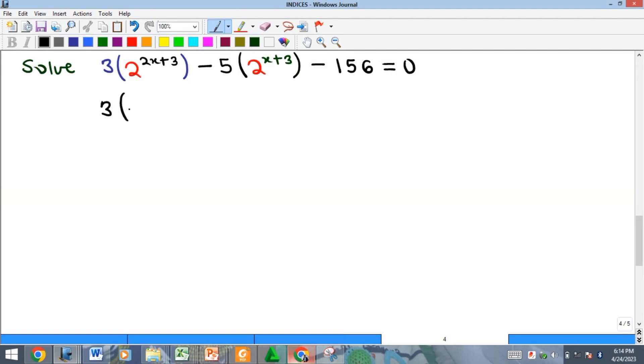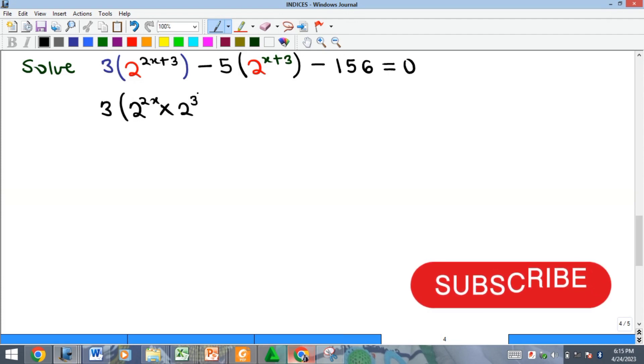We know that this is the same thing as 3 into 2 raised to the power of 2x multiplied by 2 raised to the power of 3. By the law of indices, if I change this multiplication, I'll get the addition up here.